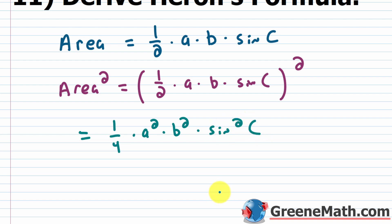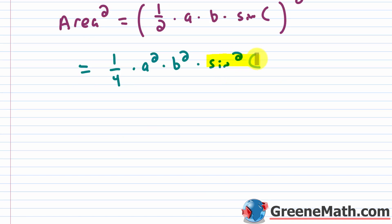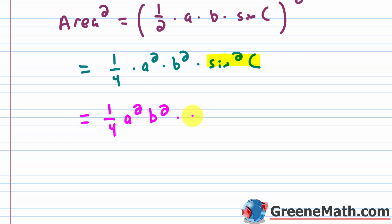At this point we're going to make a substitution. We know that sine squared theta equals 1 minus cosine squared theta, which comes from the identity sine squared theta plus cosine squared theta equals 1. So we can replace sine squared C with 1 minus cosine squared C, giving us one fourth times A squared times B squared times the quantity 1 minus cosine squared C.